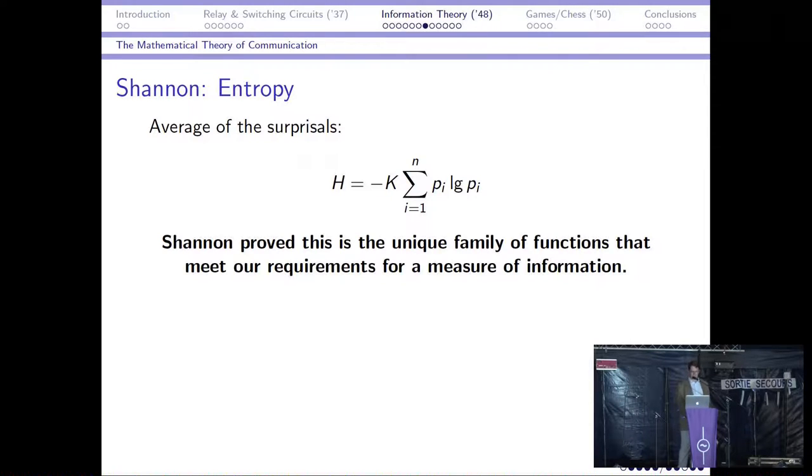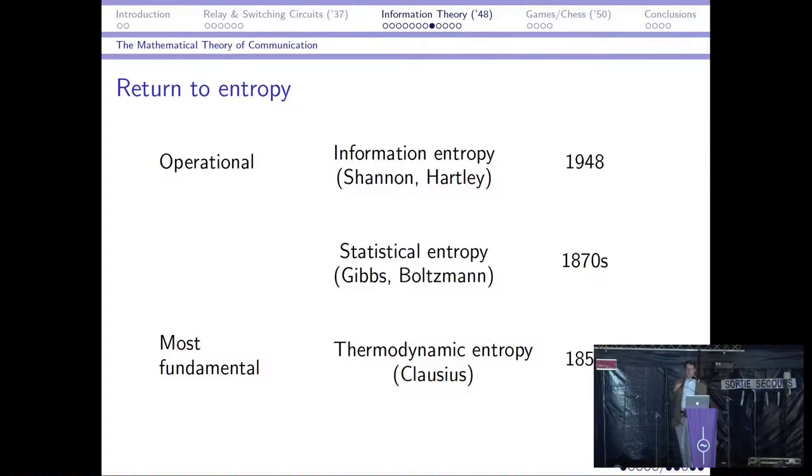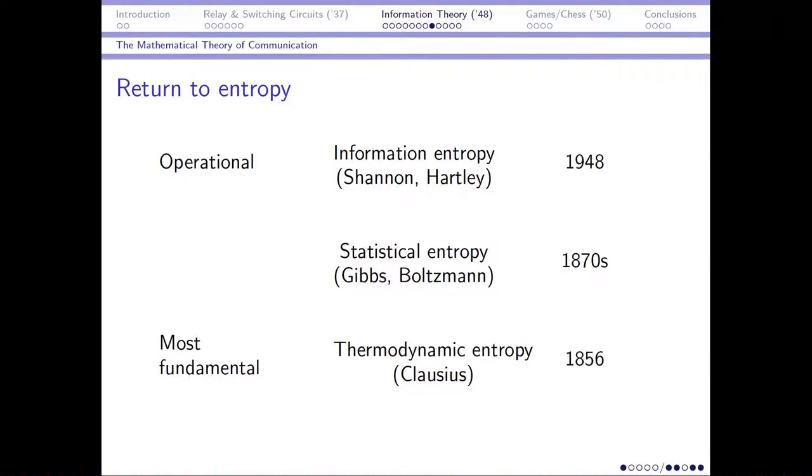And actually, he didn't approach it from the averaging point of view though. He proved that given a set of conditions that our information measure should satisfy, then this is the unique family of functions that satisfies our requirements for the information measure. And the k in here just corresponds to the units that we measure information in. So if we use base two logarithms and measure it in bits, then the k disappears. But actually, just while we've got this form, then anyone familiar with either the statistical entropy or the Boltzmann entropy will recognize this form as very similar to that concept in physics. And although Shannon didn't point this out in the original paper version of his work, he did later when it was republished in book form.